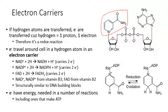If you look at the structure of these electron carriers, they actually look really similar to nucleotides — the building blocks for DNA and RNA. But your body isn't able to produce them itself; instead, it has to use vitamins to create those electron carriers. NAD+ and NADP+ are both made from vitamin B3, and FAD is made from vitamin B2.